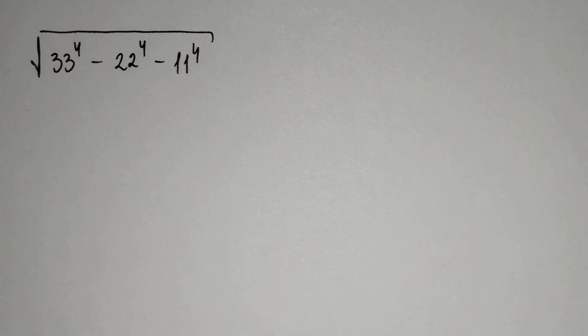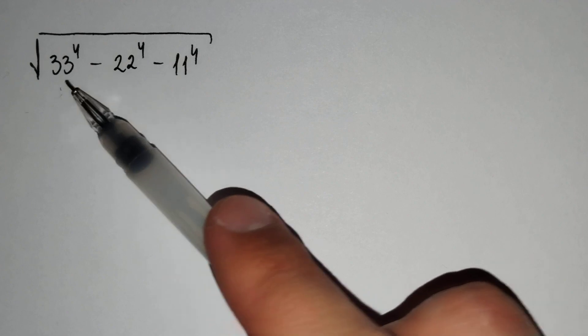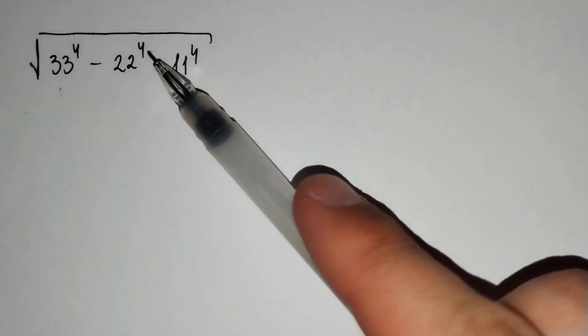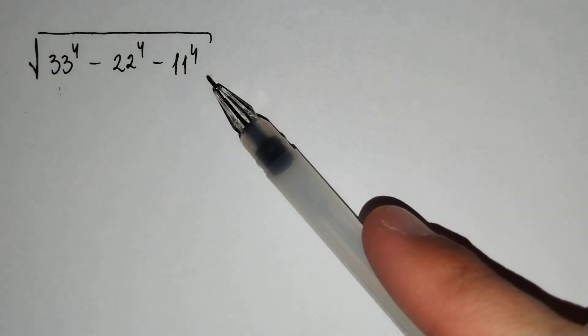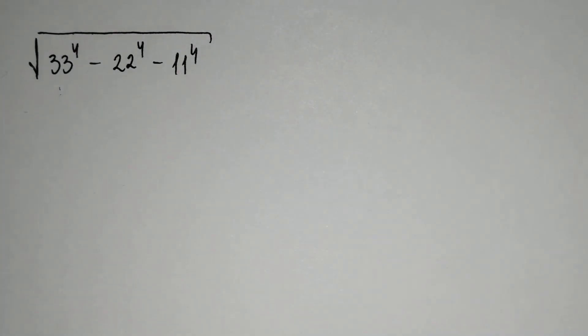Hi everyone, in this video we will solve this problem: the square root of 33 to the power 4 minus 22 to the power 4 minus 11 to the power 4. How should we solve this problem?